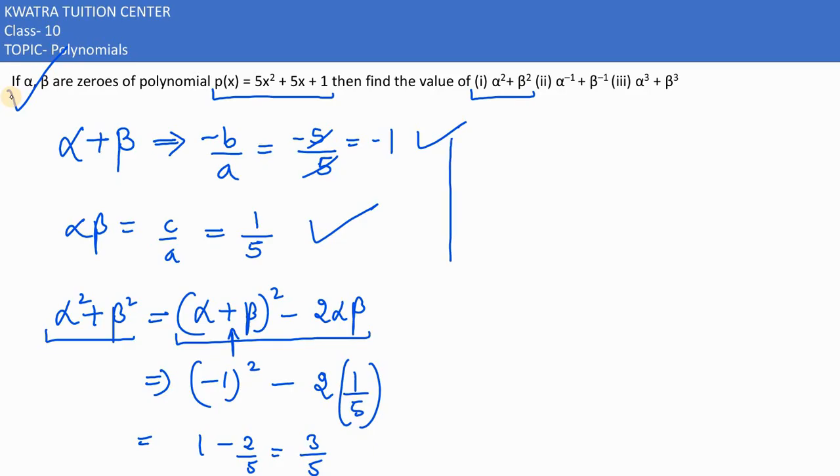Secondly, what is the situation we have to do? Alpha to the power minus 1, this would become 1 by alpha, beta to the power minus 1, that would be 1 by beta. LCM logo, this would be alpha plus beta, and in denominator you would have alpha dot beta.